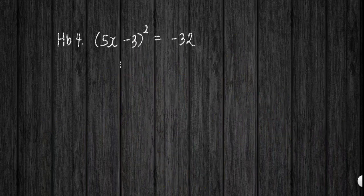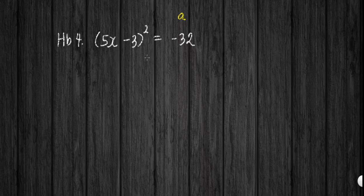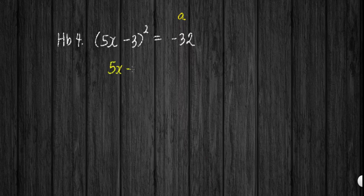What if our given is (5x minus 3) squared equals negative 32? As you can see, our a here is a negative number. The question is: can we still use the square root principle in this equation? The answer is yes. But what will happen if we use the square root principle here? Applying it, we get 5x minus 3 equals plus or minus square root of negative 32.